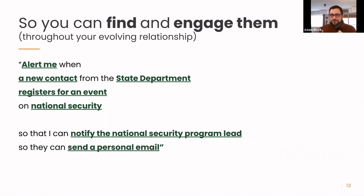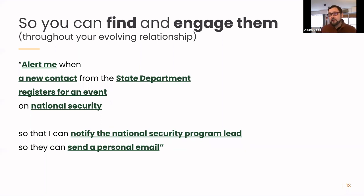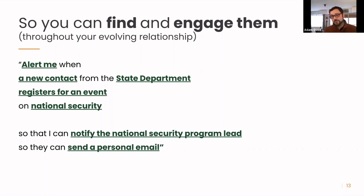Here's a specific use case: 'Alert me when a new contact from the State Department registers for an event on national security.' You're basically saying: lots of people are coming to events, but what's most important is if there's someone I don't know about who is a new contact from a highly important organization like the State Department, and they register for an event on a specific topic — alert me. I want to know so the program lead can send a personal email before the event starts, saying, 'Hey, I saw that you signed up — we're really excited to have you here.'